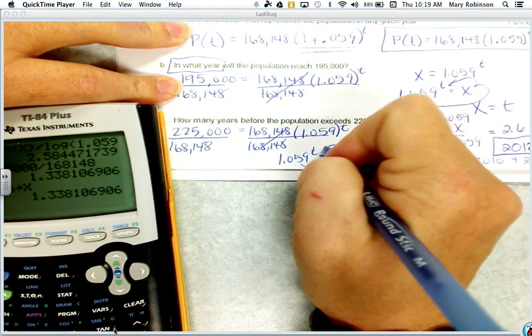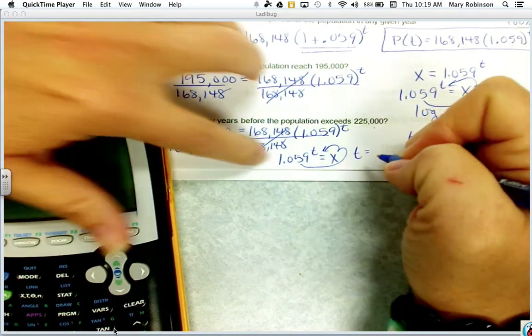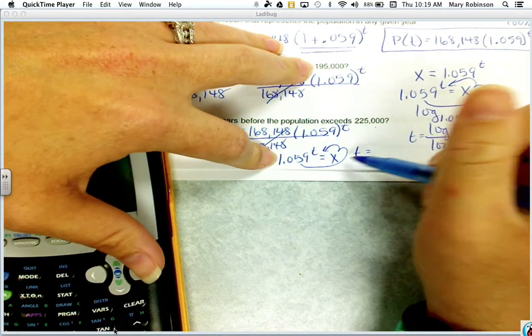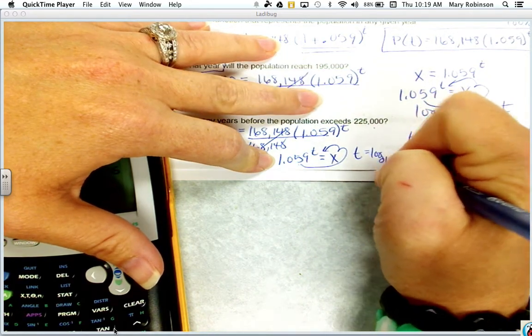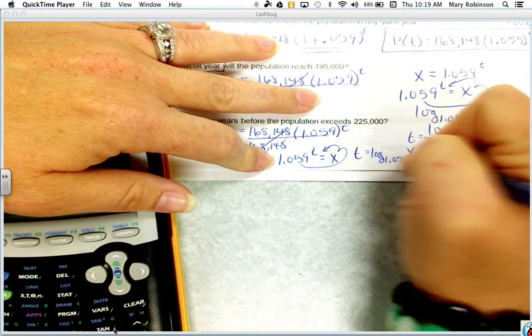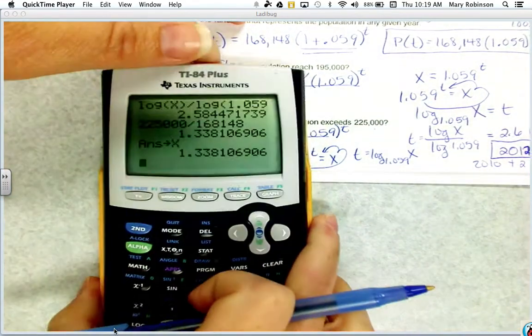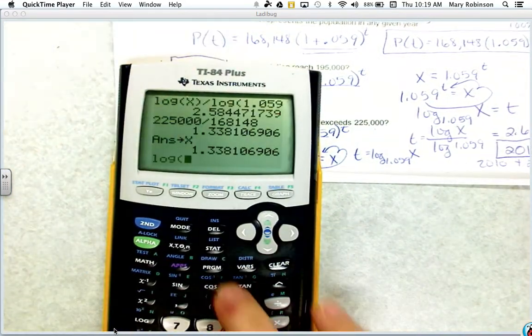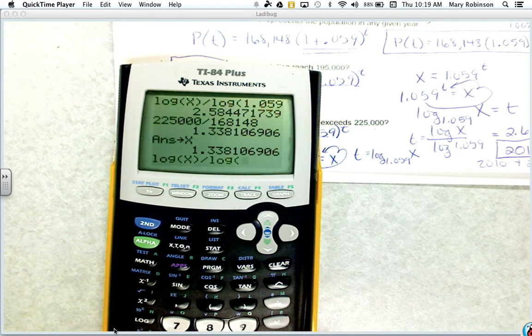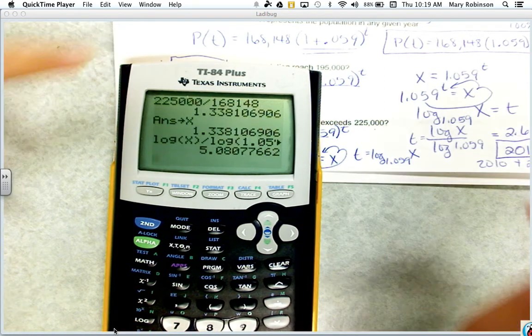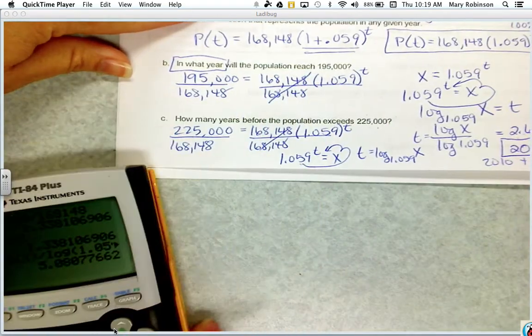So we end up with 1.059 to the t power equals x, which was this number. Convert it to log form. So we're going to end up having log base 1.059 of x, using our change of base formula, log of x divided by log 1.059 and 5.1 years.